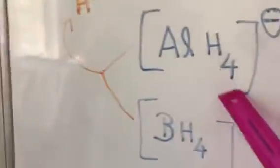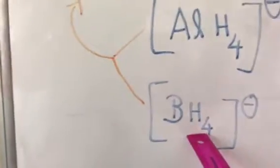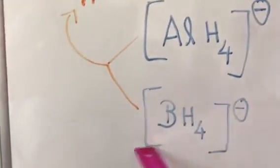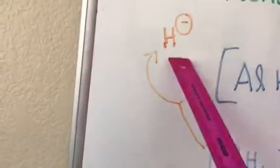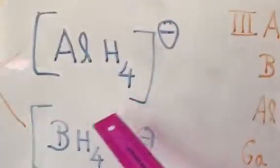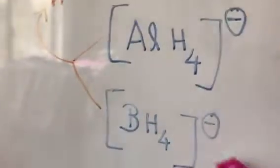Both these reducing agents function by releasing hydride ions. Hydride ions are negatively charged hydrogen ions — the anion of hydrogen is referred to as a hydride ion. So both are complexes and both function as reducing agents by releasing hydride ions.